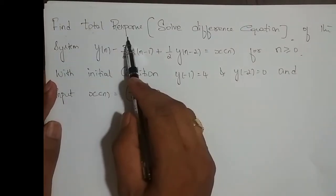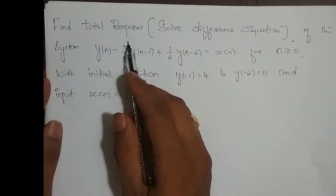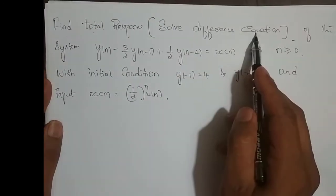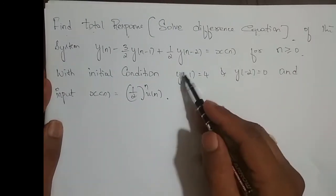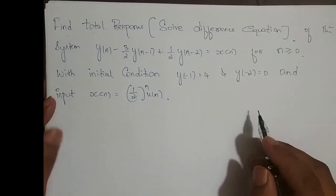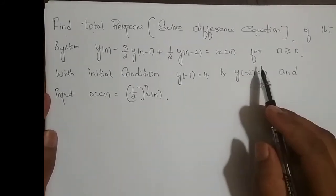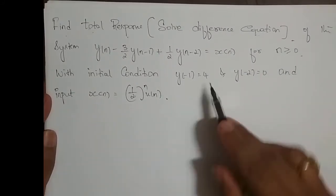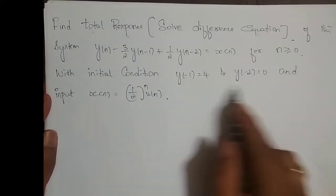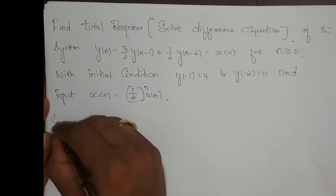Here I need to find the total response of the system. Finding the total response of a system is nothing but solving a difference equation. Whenever they ask to solve a difference equation, it is nothing but finding the total response, and again finding a response is nothing but finding the output y(n). We will try to solve it.